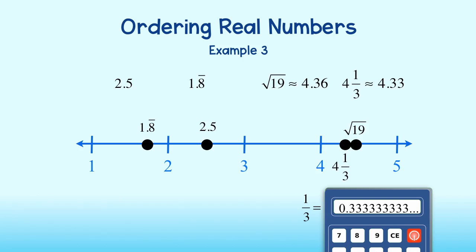Great! Now we can easily write the numbers in order. 1.8 repeating, 2.5, 4 and 1 third, and the square root of 19.